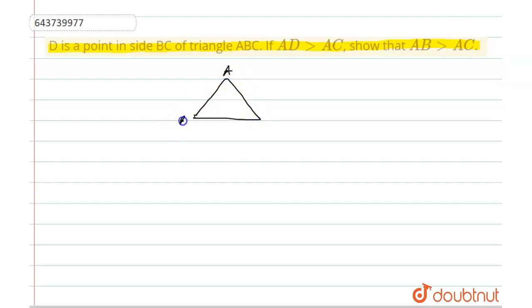this is C, and let's suppose this is the point D. Now the thing that we need to show is if AD is greater than AC, then AB is greater than AC.